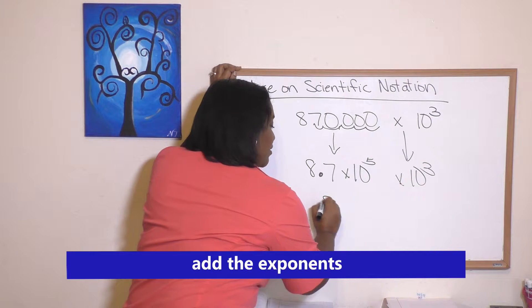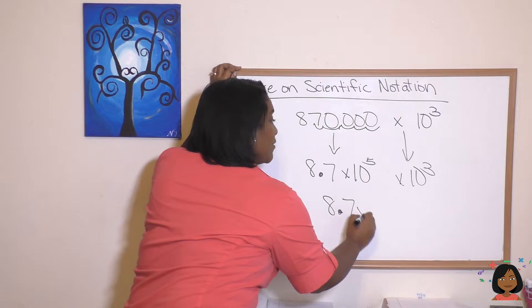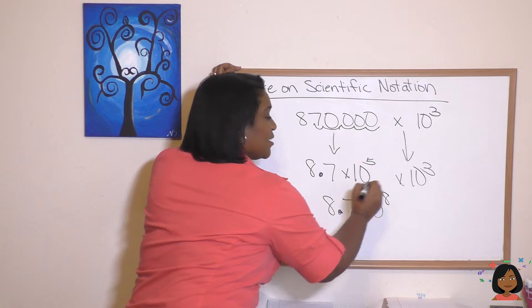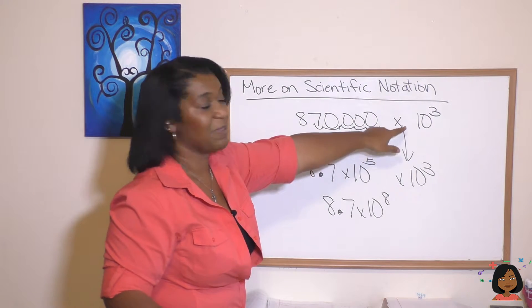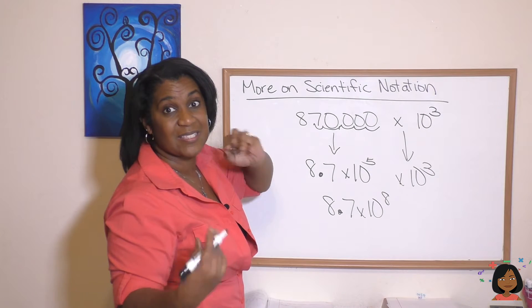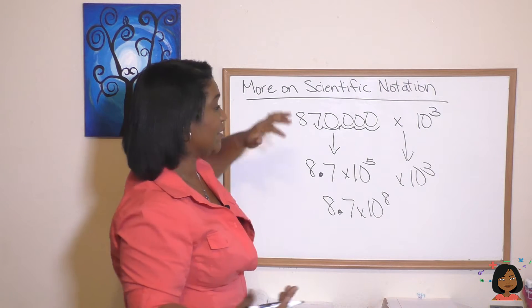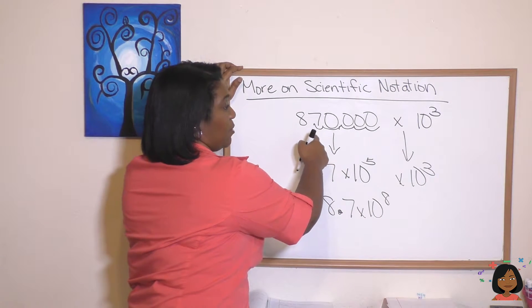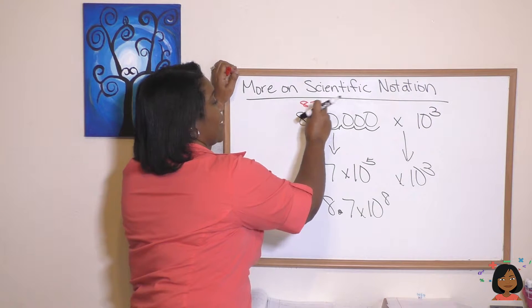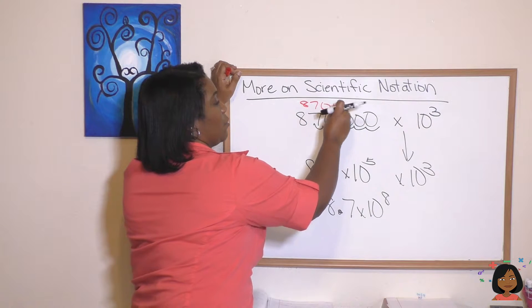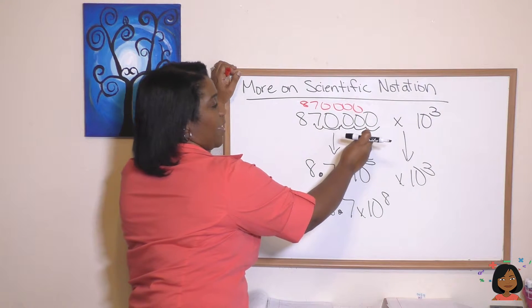So this is going to be 8.7 times ten to the eighth. Think about it: if we were gonna multiply this by ten to the third, essentially we would be adding three decimal places, right? So this number would—I'm gonna write it in red—would be 87, one, two, three, the four zeros that were there, plus three more: one, two, three.